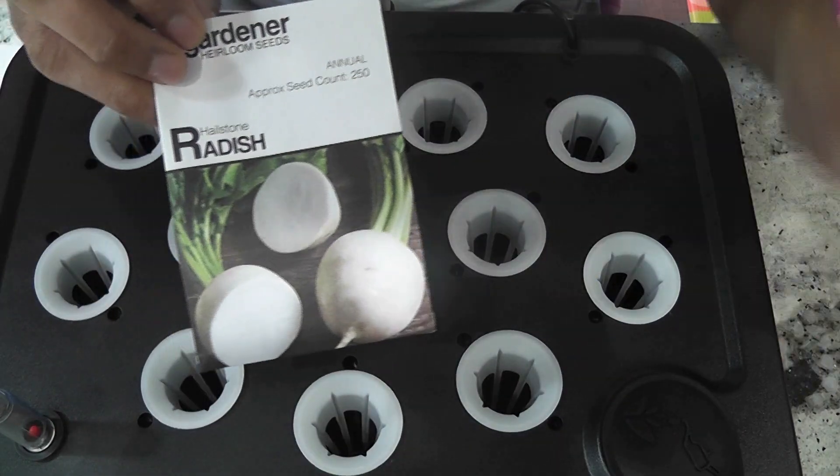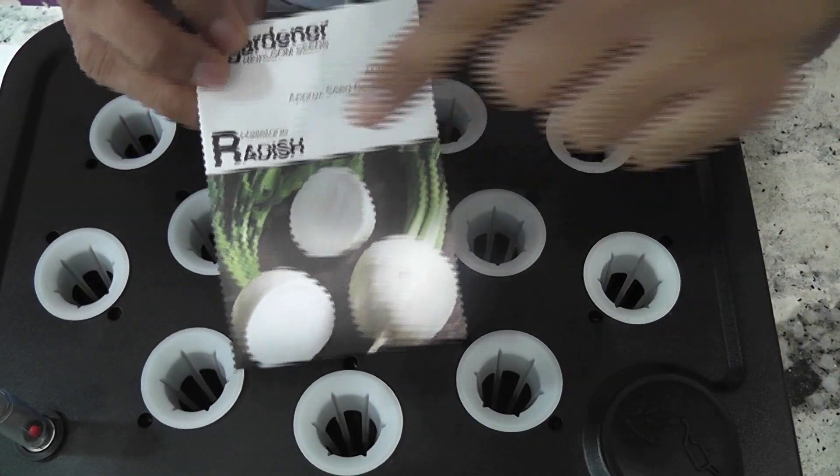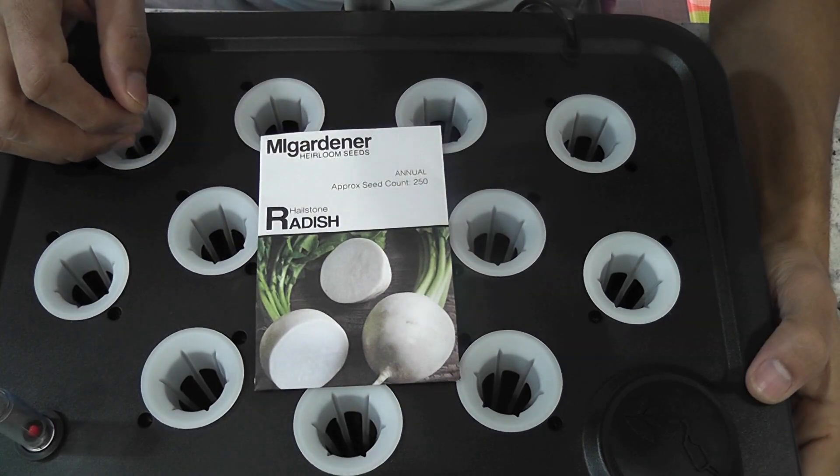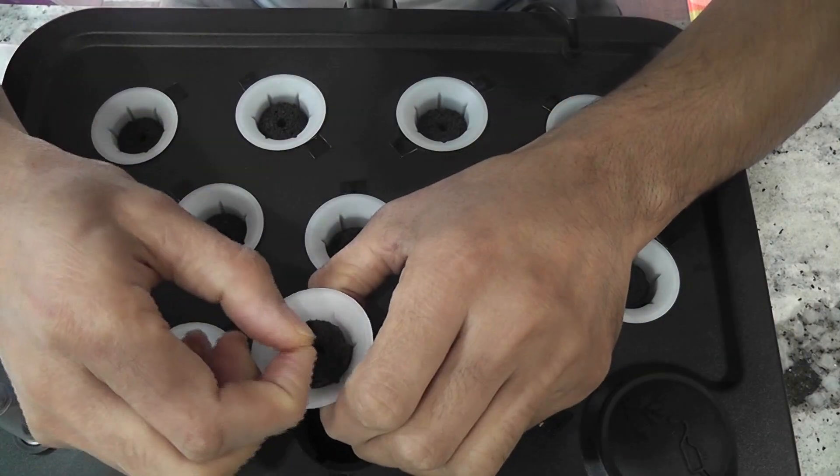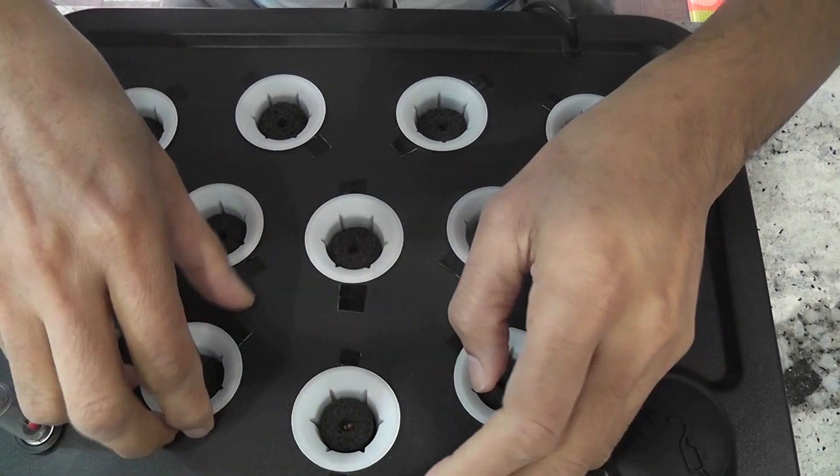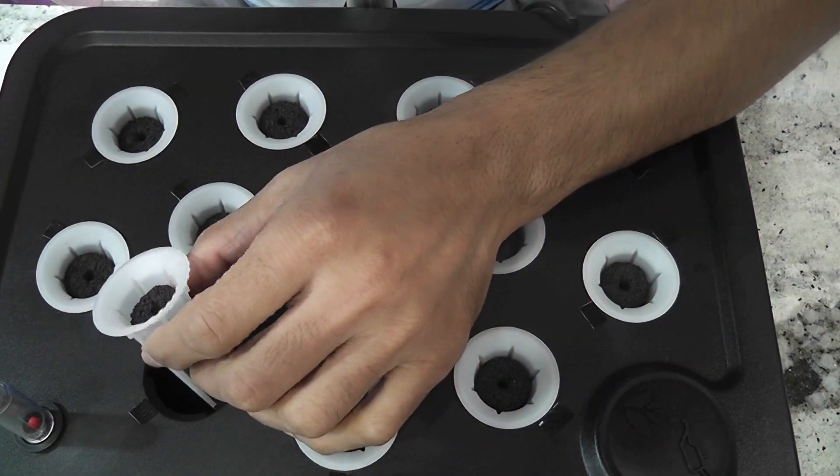For the first experiment, I will grow Hailstone radishes. If everything goes well, I should be able to harvest radishes in 30 days. Let's see. That is all for now, thanks for watching, and happy gardening.